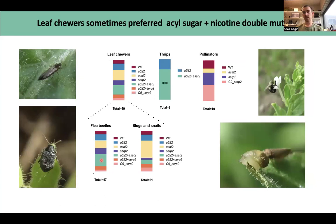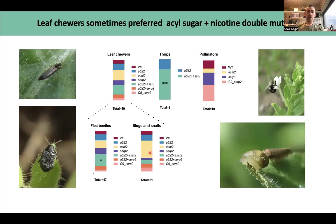Flea beetles were not affected by nicotine mutants alone, not affected by acyl sugar mutants alone, but they were affected in the double mutants. This doesn't mean there's an additive effect — it means both nicotine and acyl sugars are individually sufficient to protect the plants from flea beetles. Only when we lose them both does the plant become susceptible. The same is true for thrips. Snails and slugs showed a trend for acyl sugar mutants but it wasn't significant after compensating for multiple comparisons. Pollinators basically went wherever there were flowers — nothing to do with chemotype.